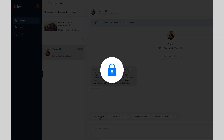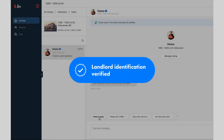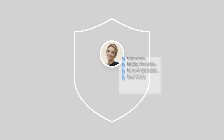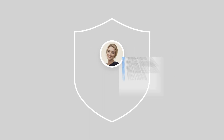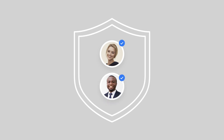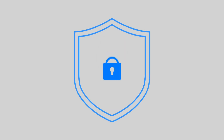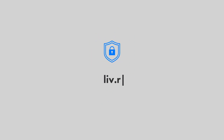Remember that to view tenant applications, you'll first need to verify your identification and profile. Since renters are required to provide sensitive information in order to verify their profile and generate their trust score, we ask that landlords confirm their identity in order to keep Livrent safe for all users. You can learn more about how we store and protect your information at liv.rent/privacy.